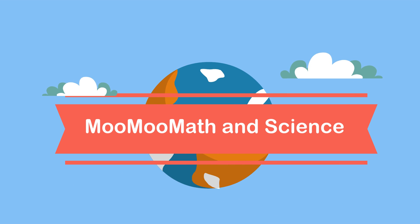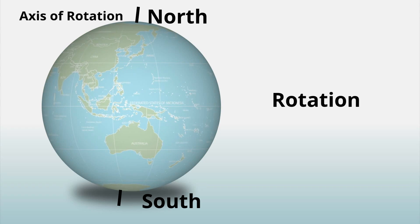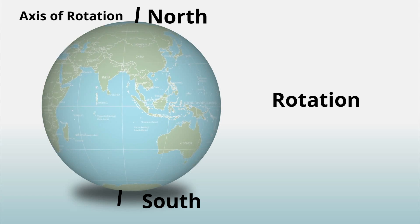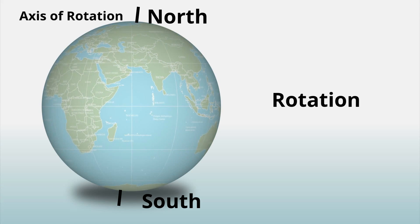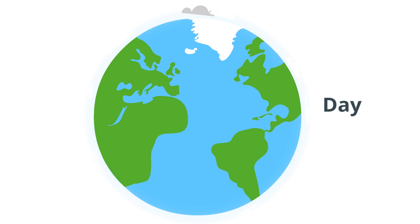The Earth rotates in 24 hours around an imaginary axis in a counterclockwise direction. This rotation causes our daytime and nighttime.